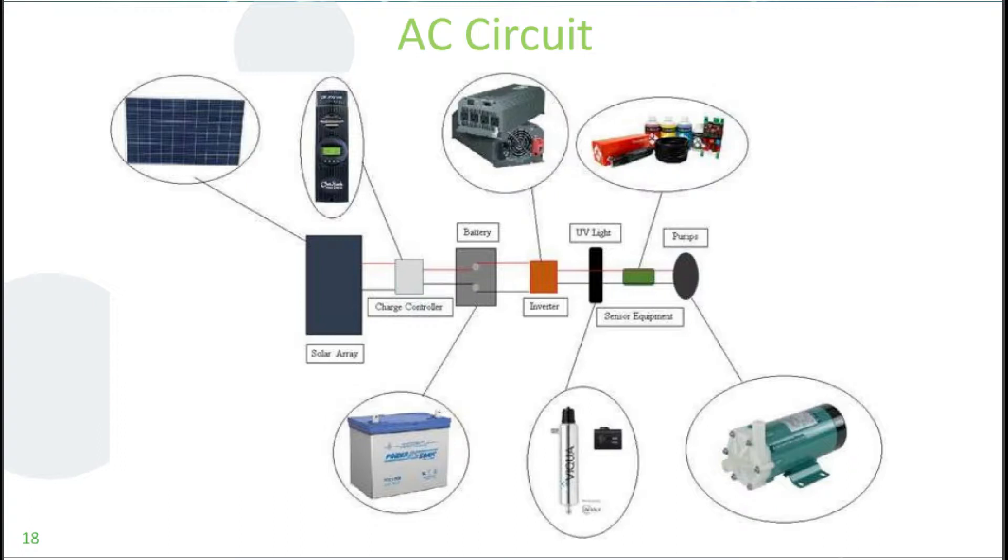The main purpose of our battery is so that we can keep the app and the sensors up and running after hours, as well as do extra UV treatment after hours as needed. So the battery connects to the inverter, which is what does the converting of DC to AC power.